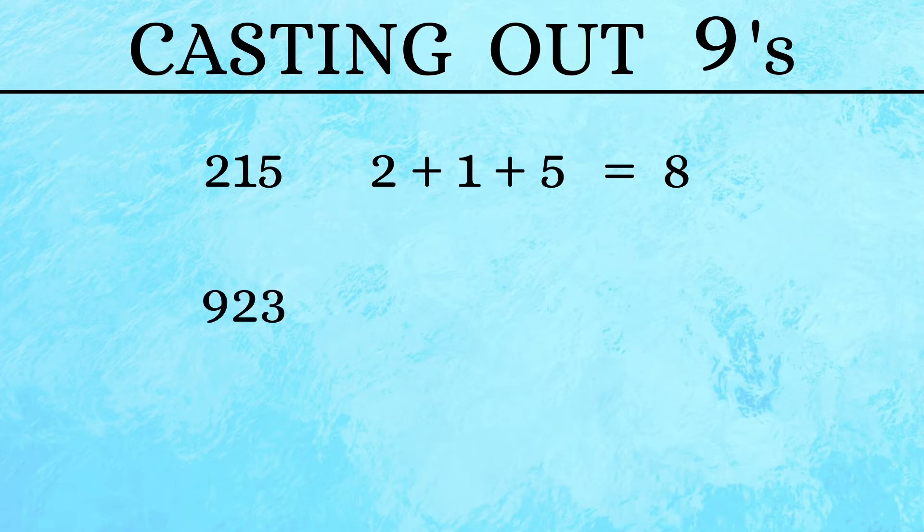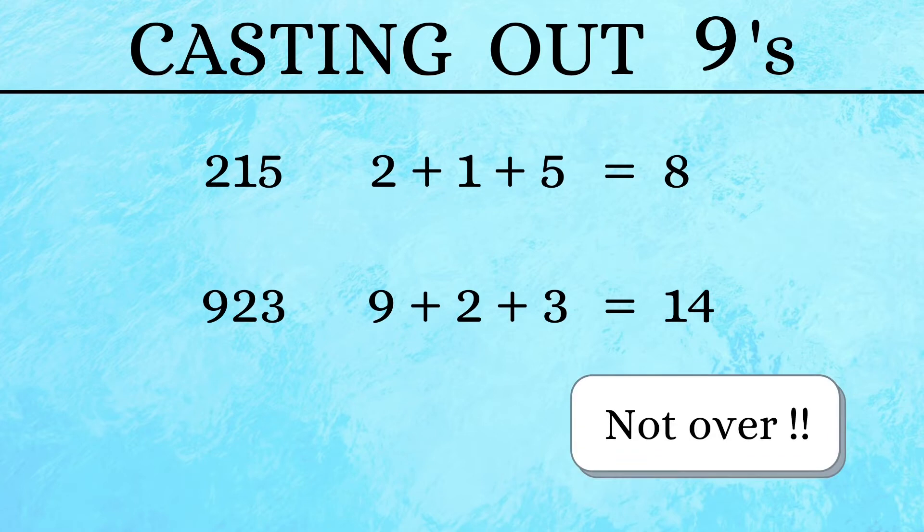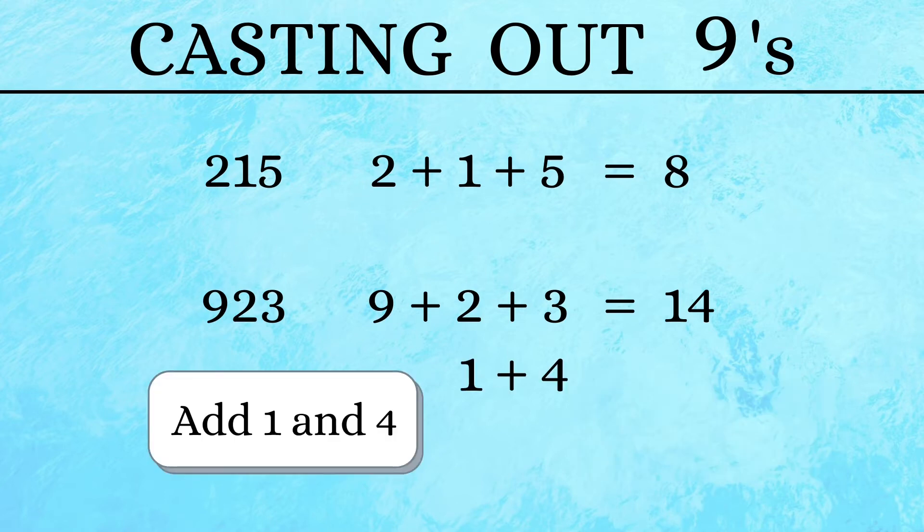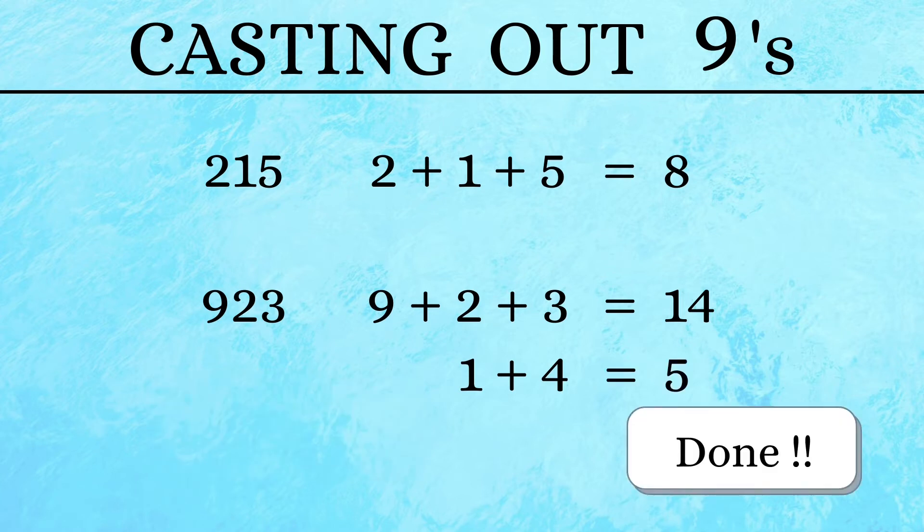For 923, we add up 9, 2, and 3 to get 14. But here we are not done yet. We need to add the digits again until we are left with a single digit. So we add up 1 and 4 to get 5, and now we are done.